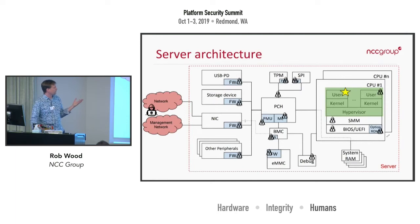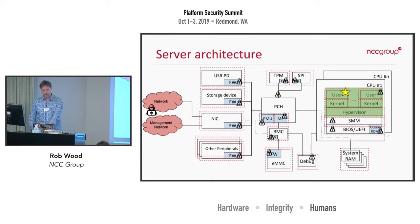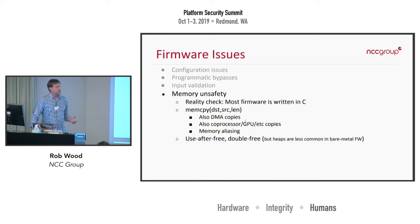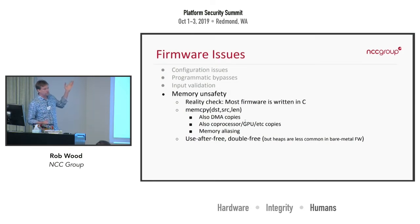What I want people to stop doing is drawing the threat boundary around the whole system, and instead draw it around the individual embedded systems within that system. Since all of this is written in C, you have to ask: where does the data come from, and where does it go? The 'where does it come from' is your input validation problem. The 'where does it go' is whether I can make use of it as an attacker — and that almost always comes down to some sort of rogue assignment or memcpy.